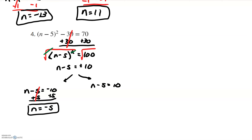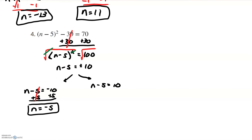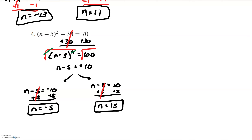I do the same thing on the equation on the right: I add 5 to both sides. The subtract 5 and plus 5 cancel, leaving me with just n on the left. 10 plus 5 is 15. Two solutions — finished.